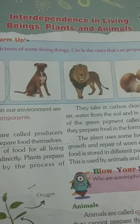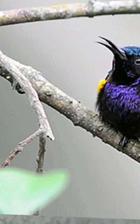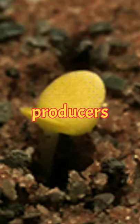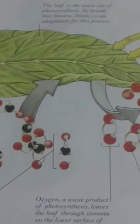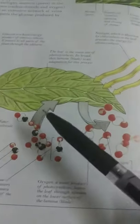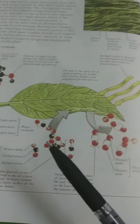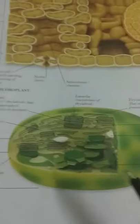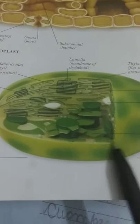The third chapter is Interdependence in Living Beings: Plants and Animals. We discussed biotic components — biotic components are all living beings in nature. Green plants are the producers because they prepare their own food by the process of photosynthesis. They take carbon dioxide from the air, water from the soil, and in the presence of sunlight and chlorophyll they prepare food in the form of sugar.